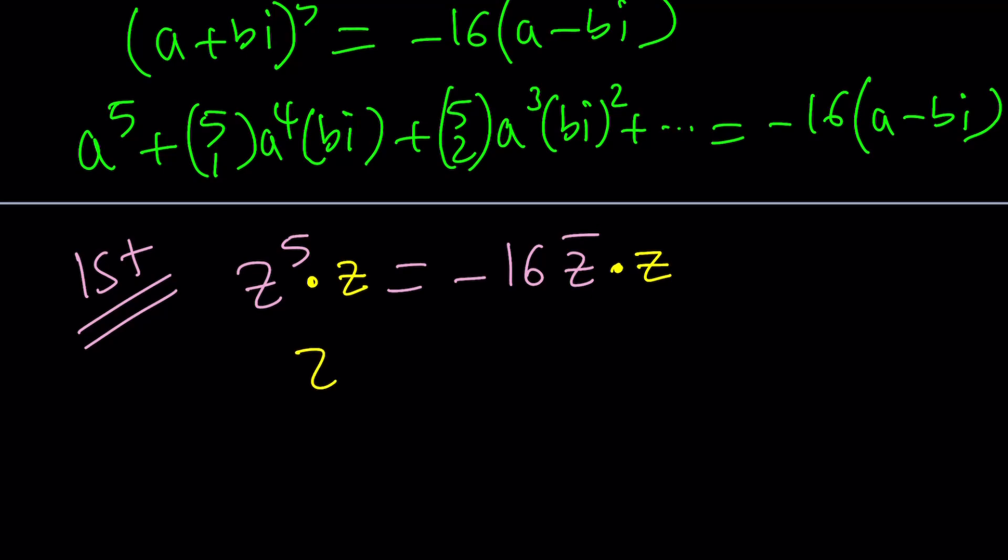So now the left-hand side is Z to the sixth and this gives us what? The absolute value of Z squared. Nice. Don't forget to square it because A plus B I and A minus B I multiplied together gives us A squared plus B squared but the absolute value of Z or Z bar is just square root of A squared plus B squared. So it needs to be squared to get that.